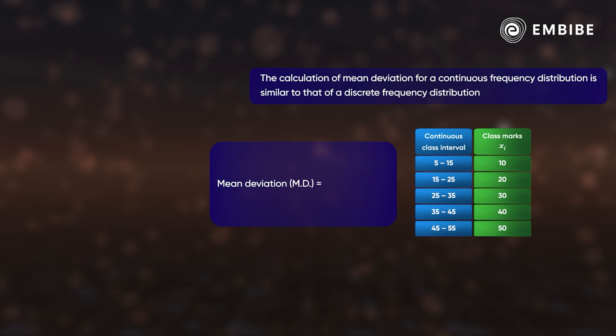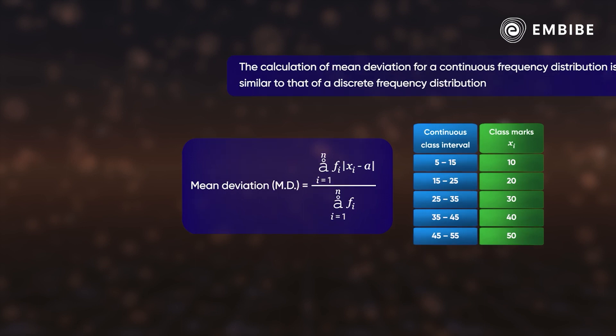Then the mean deviation about the measure of central tendency can be calculated as the sum of the products of fᵢ and |xᵢ − a|, the whole divided by the sum of the frequencies.